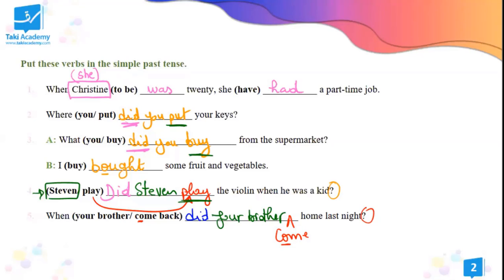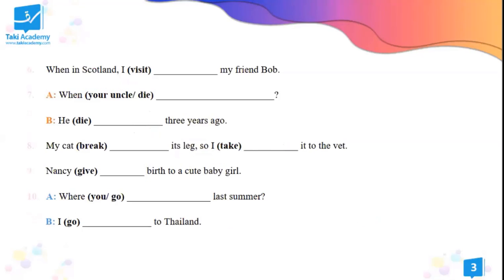Number six: when in Scotland — this means when I was in Scotland — what happened? I visit my friend Bob. Excellent — and congratulations. I visited. This is regular, so we simply add -ed.